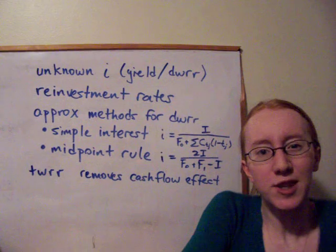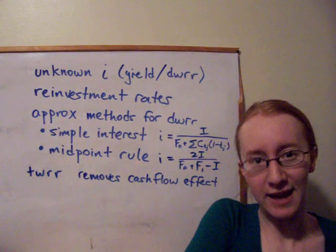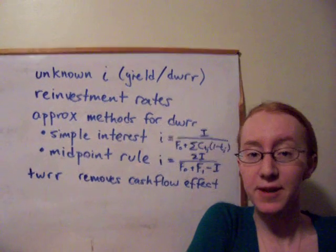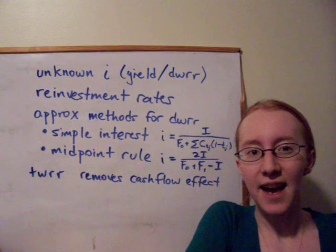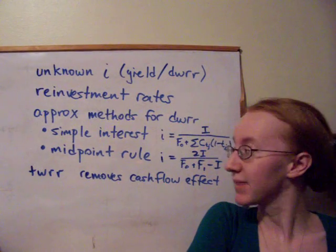So we take from the beginning to just before the first cash flow, and then from just after the first cash flow to just before the second cash flow, etc. We get an individual rate for each of those time periods, and then multiply them all together to get the rate over the course of the entire year. So that was everything for this week.